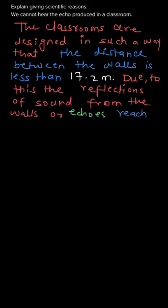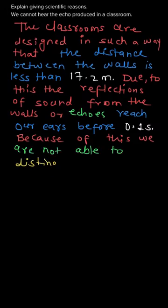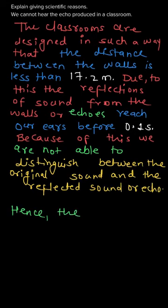Because of this, the reflection of sound from the walls — or the echoes — reach our ears before 0.1 second. Because of this, we are not able to distinguish between the original sound and the reflected sound or echo. This is because 0.1 second is the minimum time of persistence of hearing for the human ear. If two sounds have a time interval less than this, we cannot distinguish those sounds.